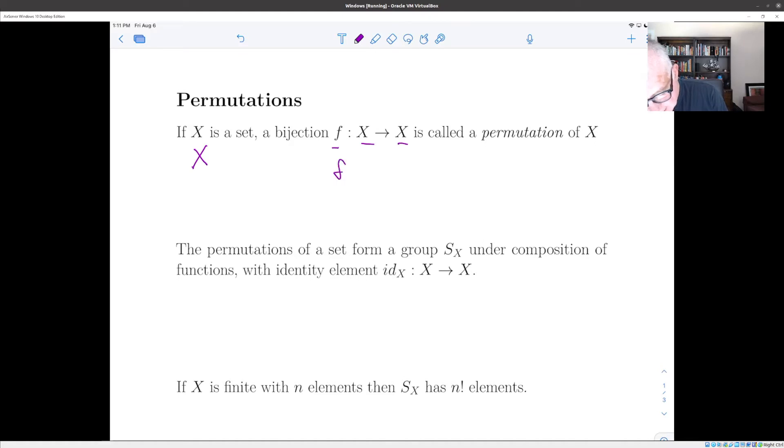the function f from Z to Z, which sends f of x to x plus one, is by this definition a permutation of the integers. It's the permutation which takes every integer and shifts it one step to the right.